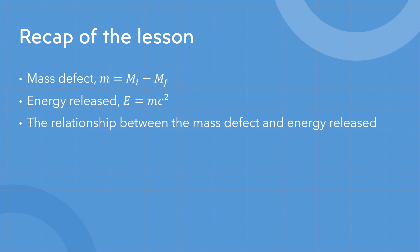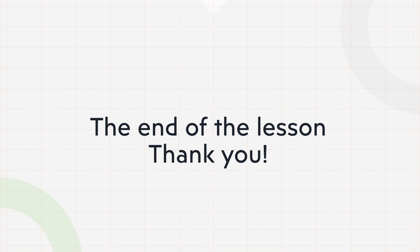Recap of the lesson: first, we learned about mass defect and its equation, m equals total mass before the reaction minus total mass after the reaction. Then we learned about the famous energy release equation E equals mc squared. We discussed how mass defect and energy release are related, and solved several problems finding energy released in nuclear fission, radioactive decay, and fusion processes. That is the end of the lesson — I hope you understand about mass defect and nuclear energy release and how they relate. Thank you for watching.